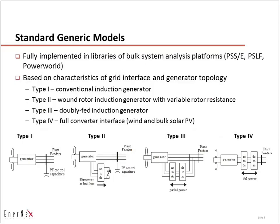Because of the range of energy conversion technologies employed, it wasn't possible to boil this down like we have for conventional generators. We ended up with essentially four types of generator topologies for wind initially. Of these four, only the last two — Type III and Type IV — are relevant today, although there is a substantial fleet of Type I and Type II turbines in the ground that still need to be represented in planning cases.